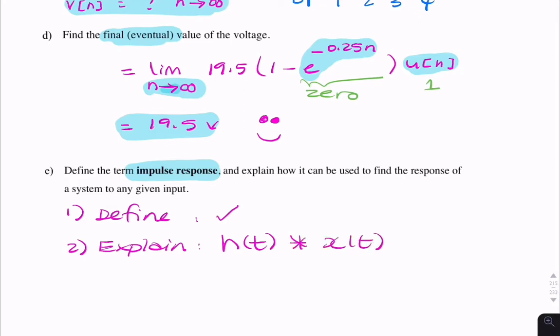The question doesn't mention whether it's discrete or continuous, so whether you write X of N and H of N, it's the same. To get the five marks for this question, you would have to define the impulse response as the output of a system when subjected to a unit impulse at the input, or you could say the impulse response is the output when the input is a Dirac delta function at T equals zero.